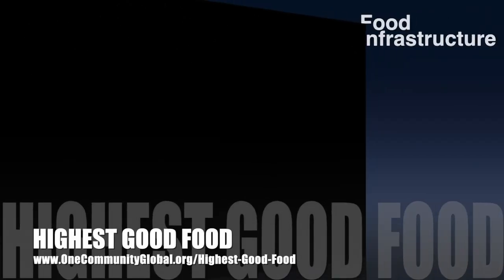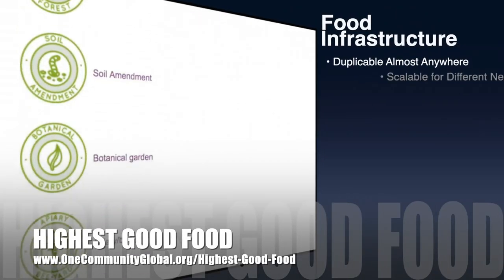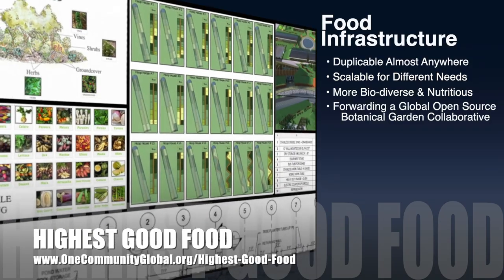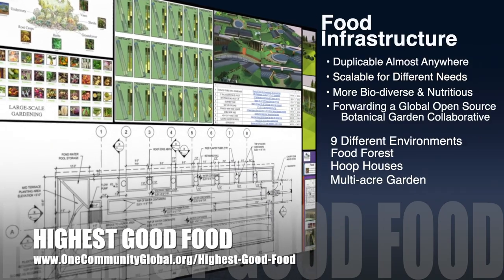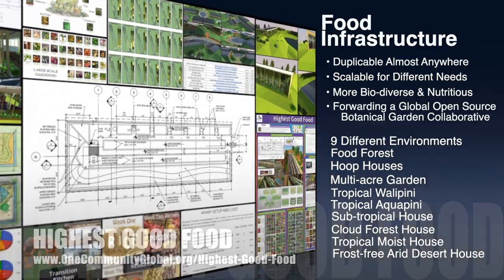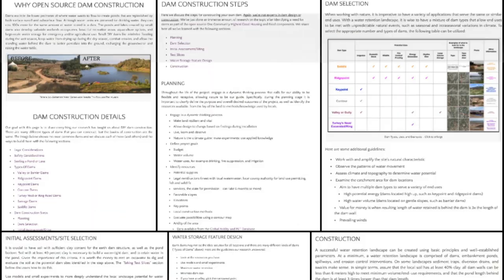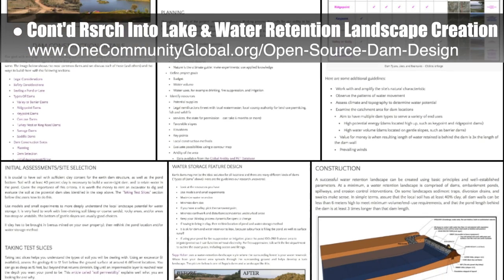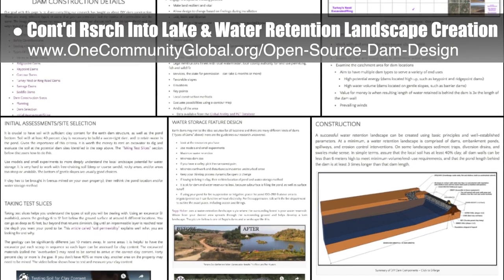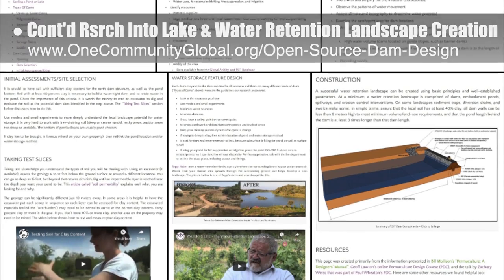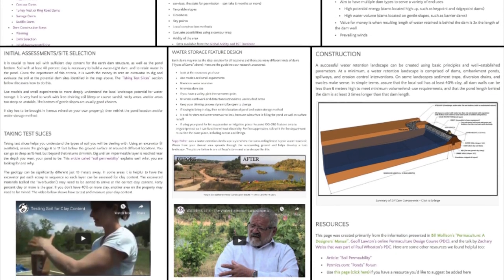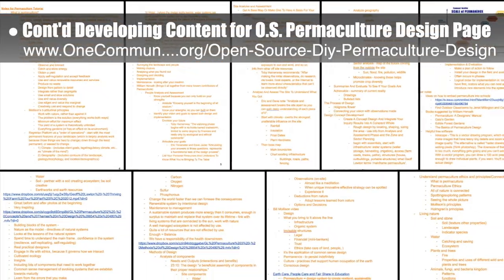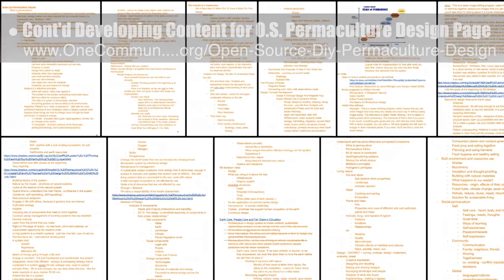One Community's approach to highest good food is duplicable almost anywhere, scalable for different needs, more biodiverse and nutritious, part of forwarding a global open-source botanical garden collaborative, and includes 9 different free-shared and duplicable growing environments. This week, the core team continued with week 16 of our development of the open-source lake and water retention landscape design tutorial. This week, we wrote the why and details section and draft one of the construction steps. You can see some of this work here. The core team also continued developing the behind-the-scenes content for the open-source permaculture design page. What you see here are some of our tutorial outline and notes so far.